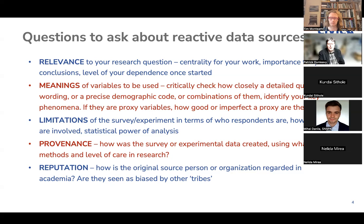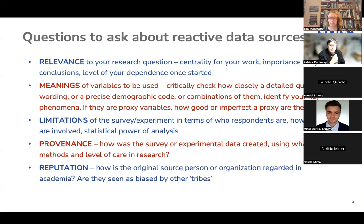It's worth thinking about reactive data sources in terms of reputation. What is the original source of the data? How do academics see this person or organization — are they seen as biased by other tribes in the academic world? For example, in Britain there's an organization called the Institute for Government, which collaborated with the Blavatnik School at Oxford to produce a comparative index of civil service effectiveness called InSize. The way the index worked was that the British civil service turned out to be classified as the perfect civil service, given a 100% score, with everybody else measured as a percentage against that — which automatically raises hackles. You need to think about not just the source, but how people critical of that source might criticize the data they generated.